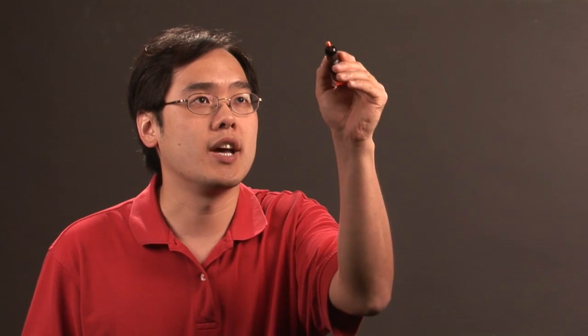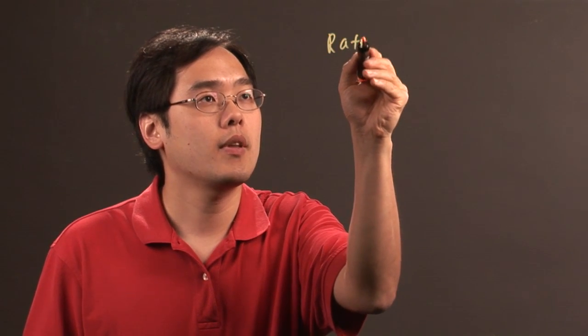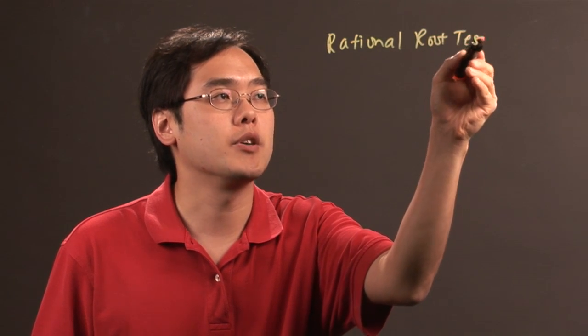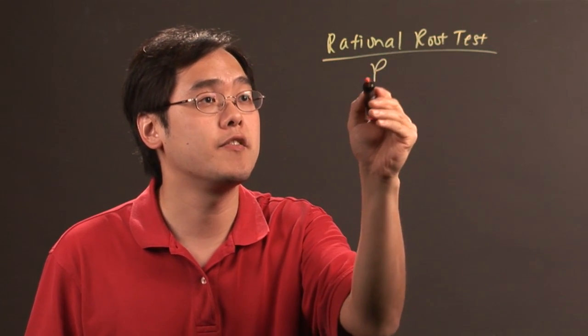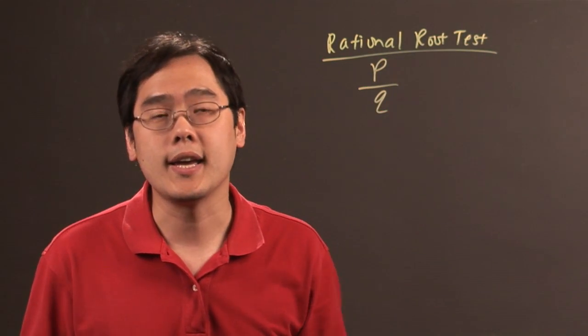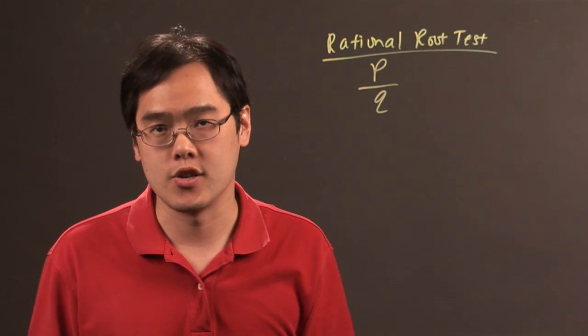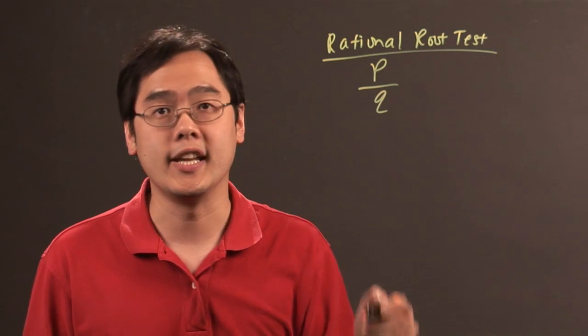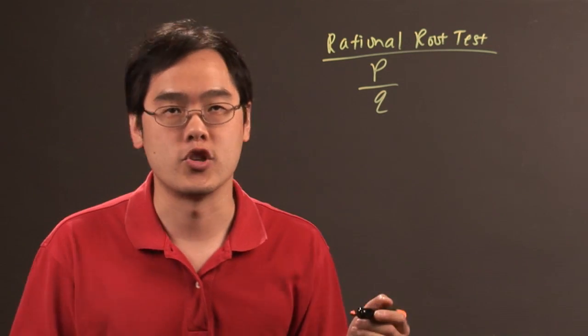Now one thing I want to consider is the rational root test is used to start breaking up a polynomial. It's of the form p over q, and p are all the factors of the constant term in the original polynomial, and q are all the factors of the leading coefficient in the original polynomial.